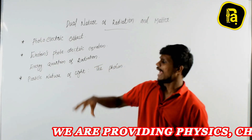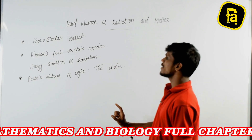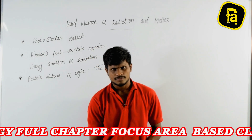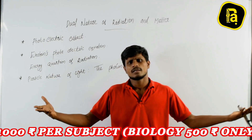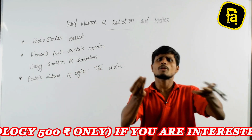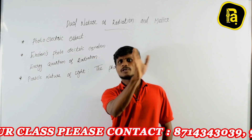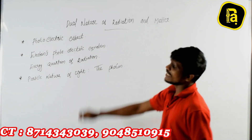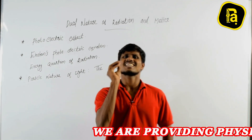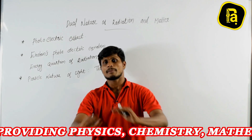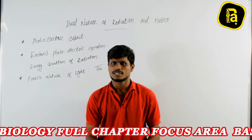We can prove that light is an electromagnetic wave. Light also has a particle nature. Matter is a particle, but matter also has a wave nature. Radiation has dual nature: it is both particle and wave. All radiation is called particle nature and wave nature.